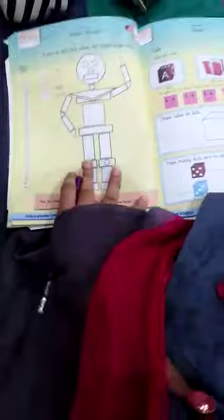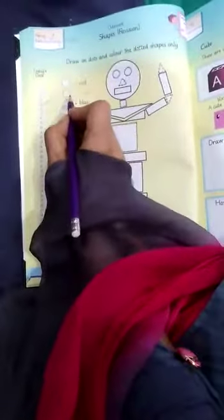Now we are done. Circle में कौन सा color करना है - red color करना है. Square में yellow, triangle में blue and rectangle में green color करना है.